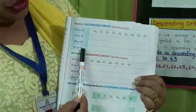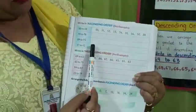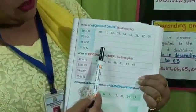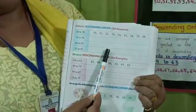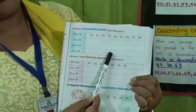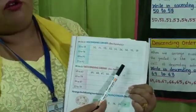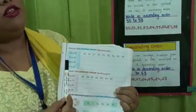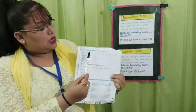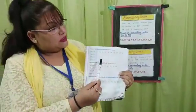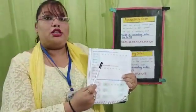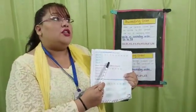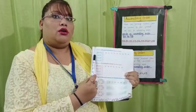37 to 42. We'll write it as 37, 38, 39, 40, 41, 42.